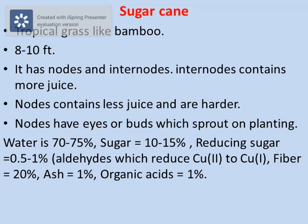We should know what sugarcane looks like. Sugarcane is a tropical grass which is like bamboo. It is 8 to 10 feet in height. It has nodes and internodes. Internodes contain more juice, while nodes contain less juice and are harder. However, nodes have eyes or buds which can sprout and can be used for planting.